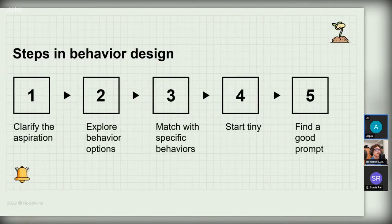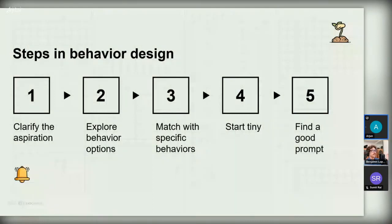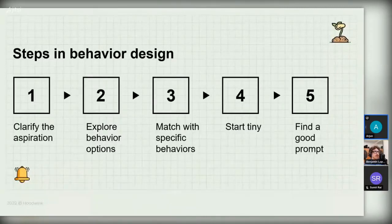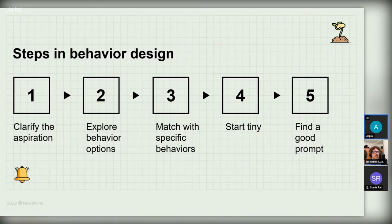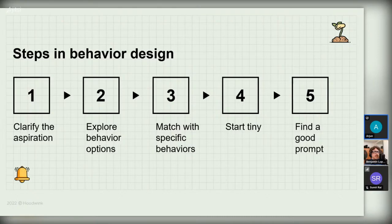Let's summarize the steps. First, clarify the aspiration — reduce stress. Second, explore behavioral options with the swarm of behaviors exercise. Third, match yourself to specific behaviors and find the golden behaviors — in our example, meditate for 30 minutes a day. Fourth, start tiny — we decided to meditate for just three breaths. Fifth, find a good prompt — where do we place this tiny habit in our day? In which part of our routine? I decided I will meditate for just three breaths every time I sit down with my coffee in the morning. These are the five steps we follow for any behavior.